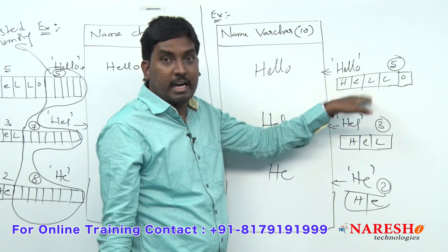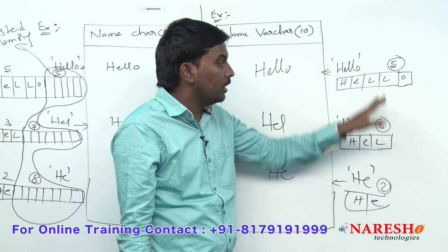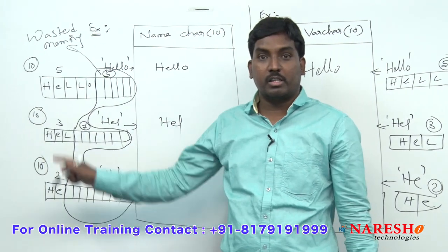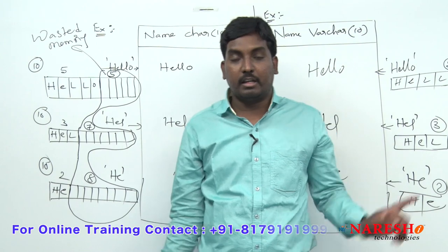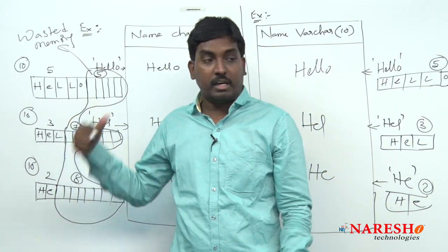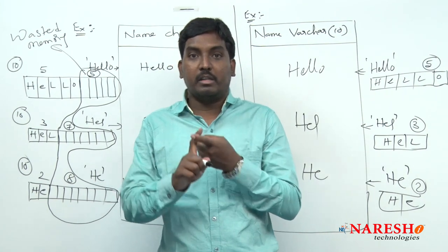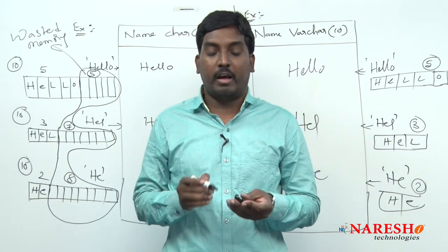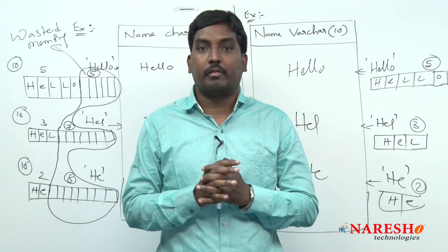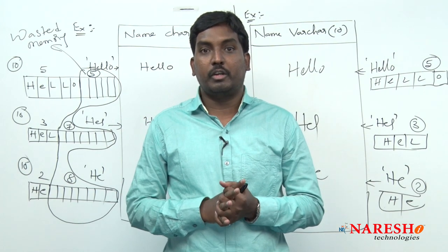Your size changes at execution level: 5, 3, 2. But with CHAR, the size stays 10, 10, 10 at every execution. So CHAR is static with memory wasted, and VARCHAR is dynamic with no memory wasted. That is the difference between CHAR and VARCHAR. If anybody asks you what the difference is, you can explain this. Thank you for watching this video.